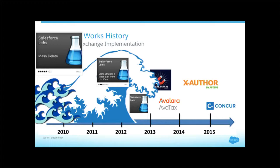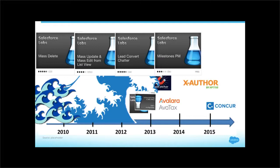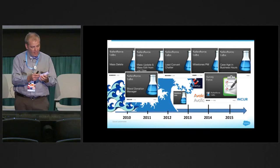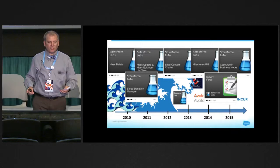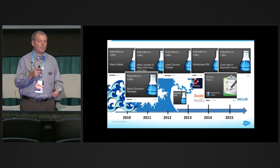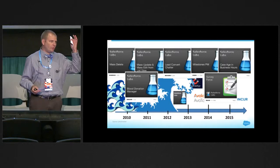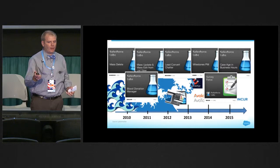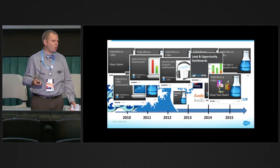Salesforce Labs apps are free and open source — you can make any changes to them that you want. Good examples include blood donation manager, lead convert chatter, milestones PM, case age, business hours, Survey Force, mass delete, mass update, and mass edit. They also have tons of dashboards — if you want quick reporting ideas, load them in and immediately see how it works, then customize those reports to fit your needs.